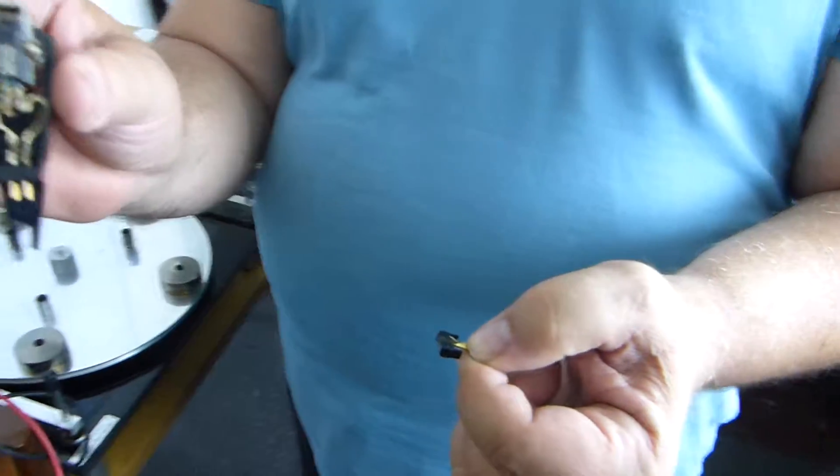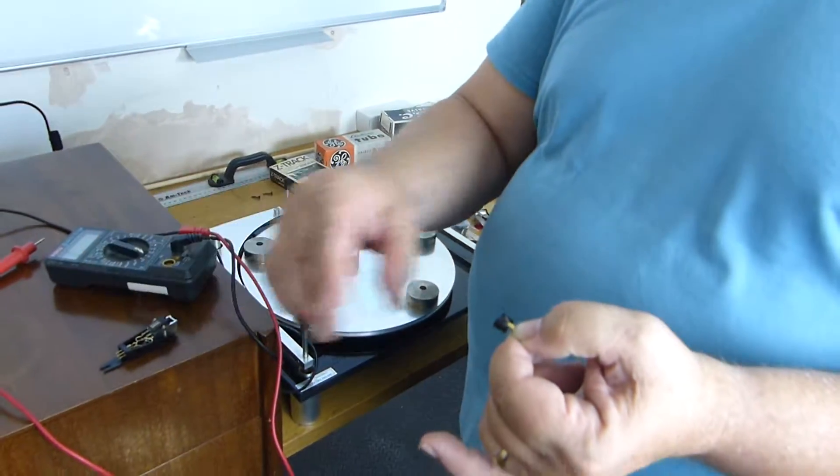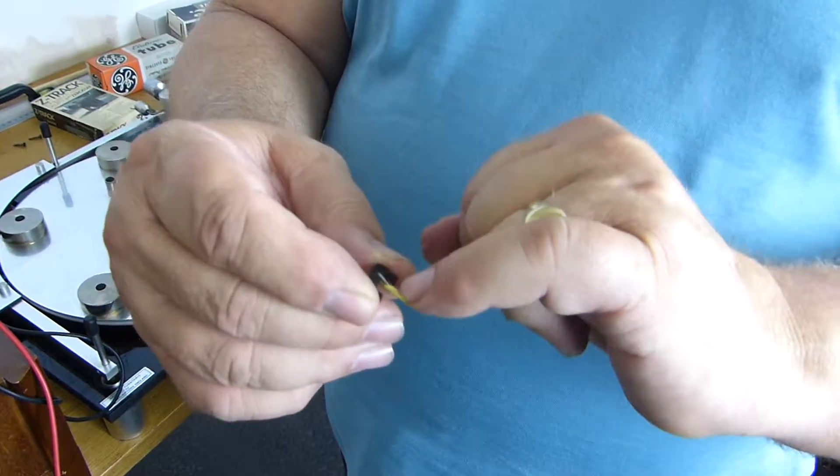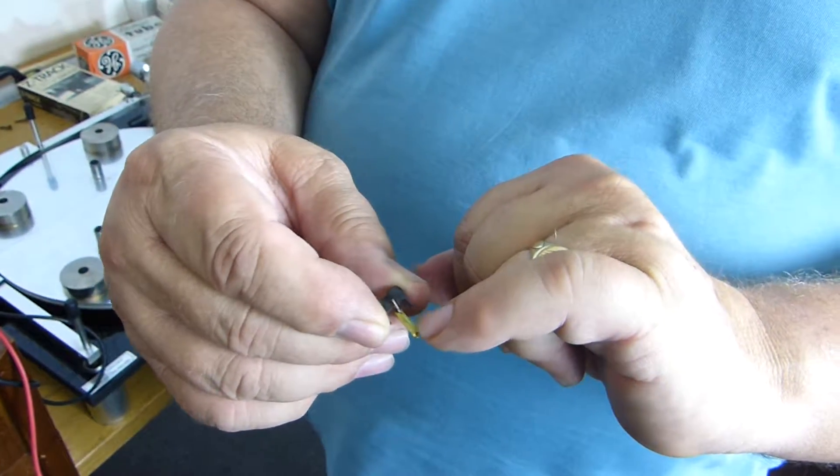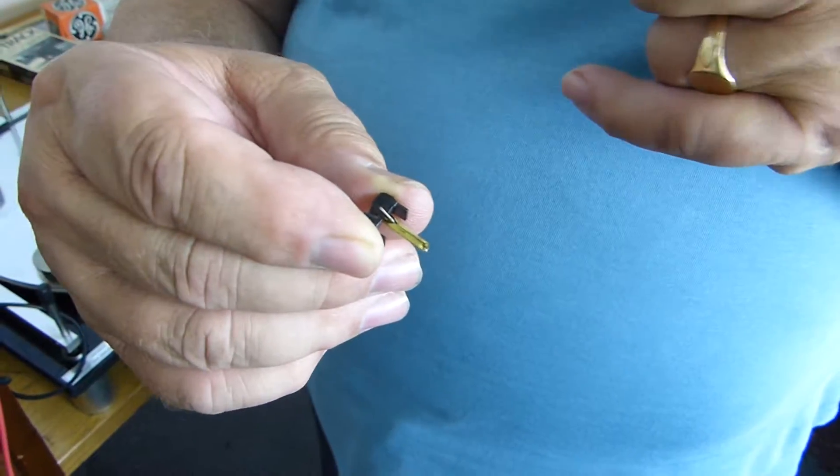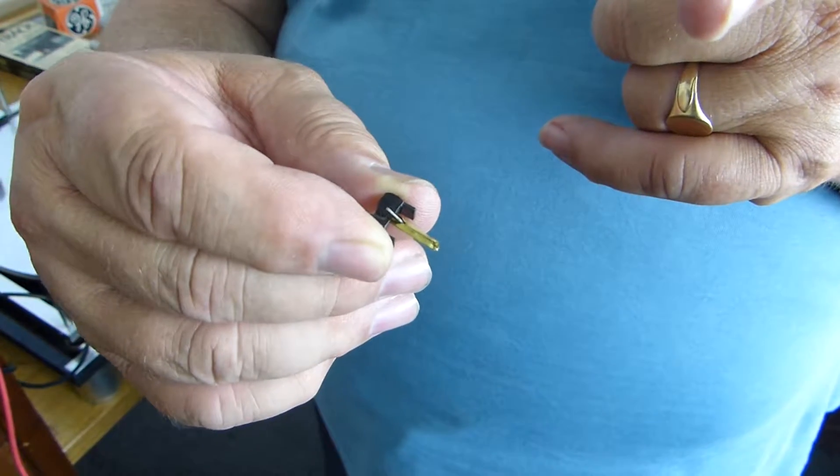The coils are fixed. What happens is the stylus moves, and on the end of that stylus cantilever, which you can't see because it's inside this tube, the piece on the end of that is moving within the magnetic field.